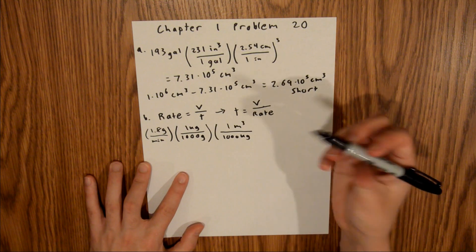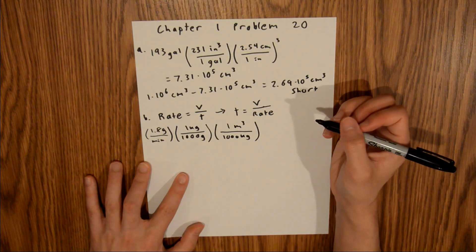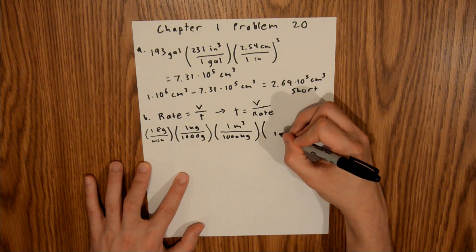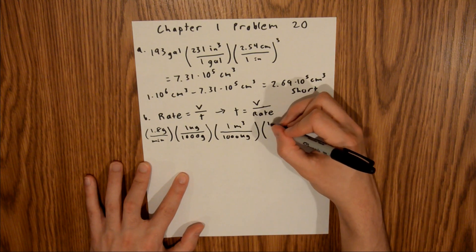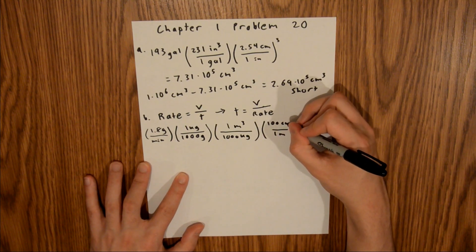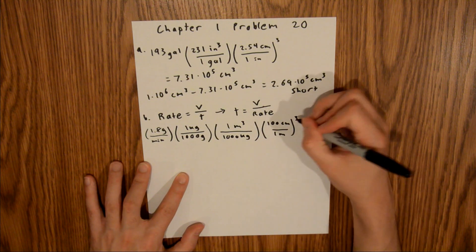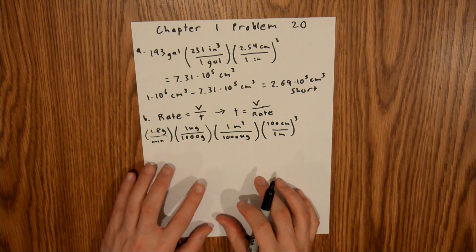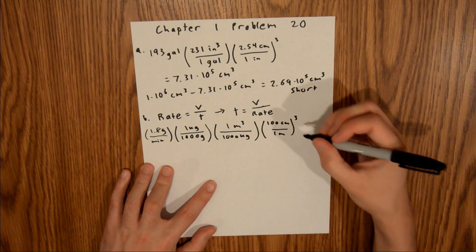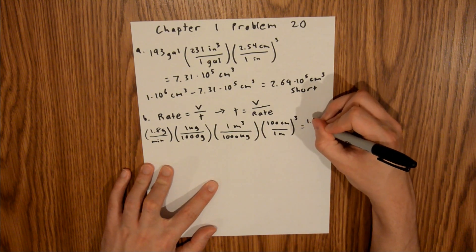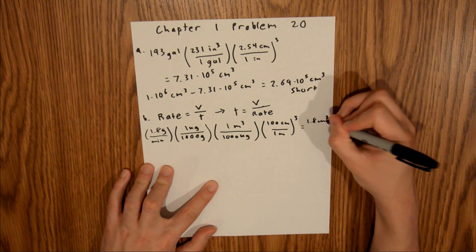And since our volume up here is in centimeters cubed, we need to convert that into centimeters, and so now we have 1 meter is 100 centimeters, and again here we have meters cubed and meter, so we need to cube this term. And if you plug all of that into your calculator, you will find that this is equal to 1.8 centimeters cubed per minute.